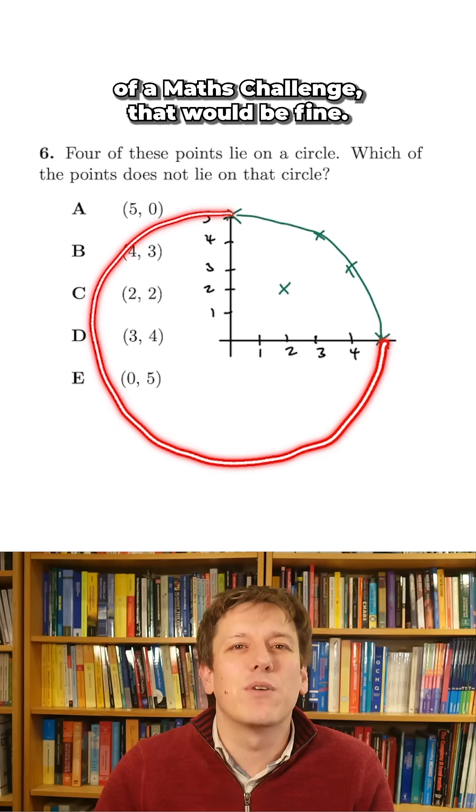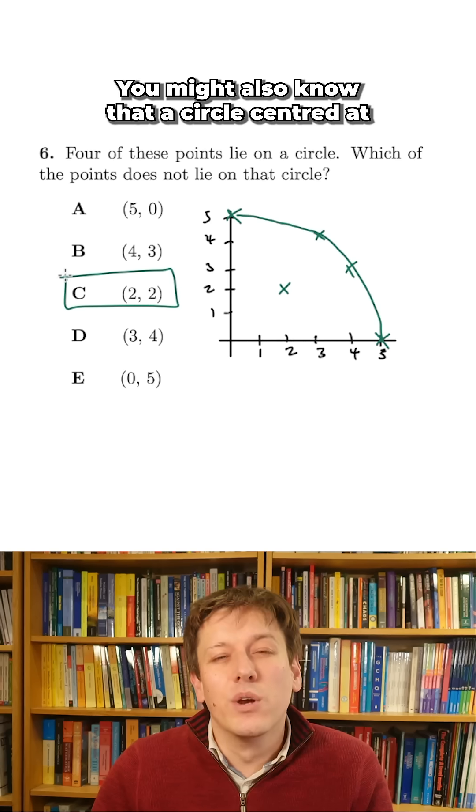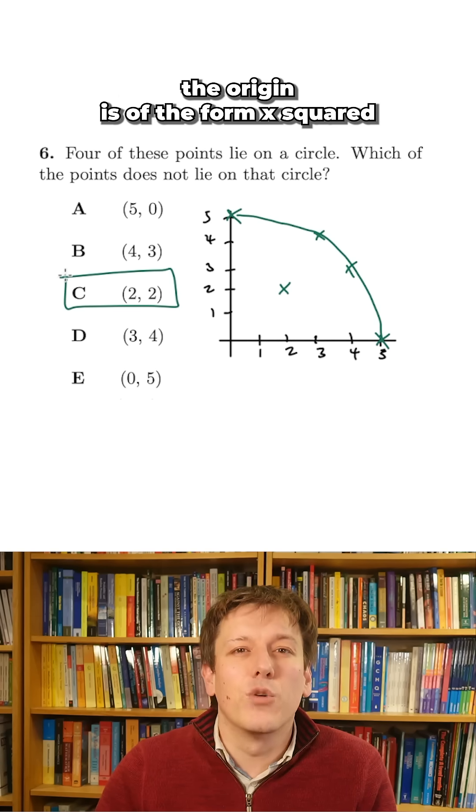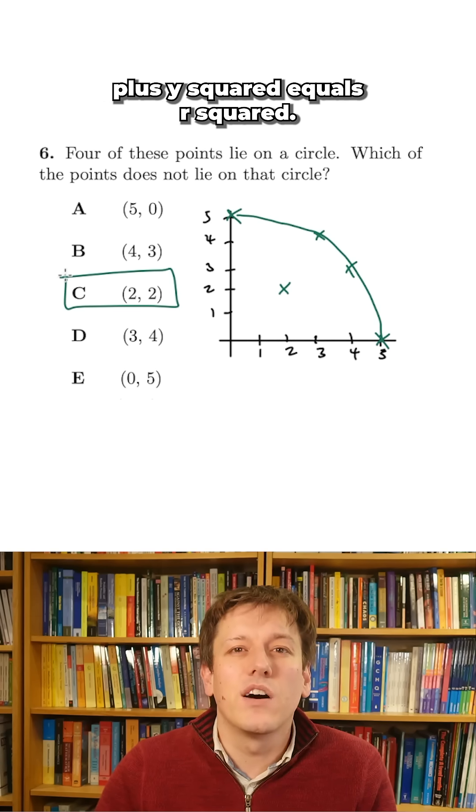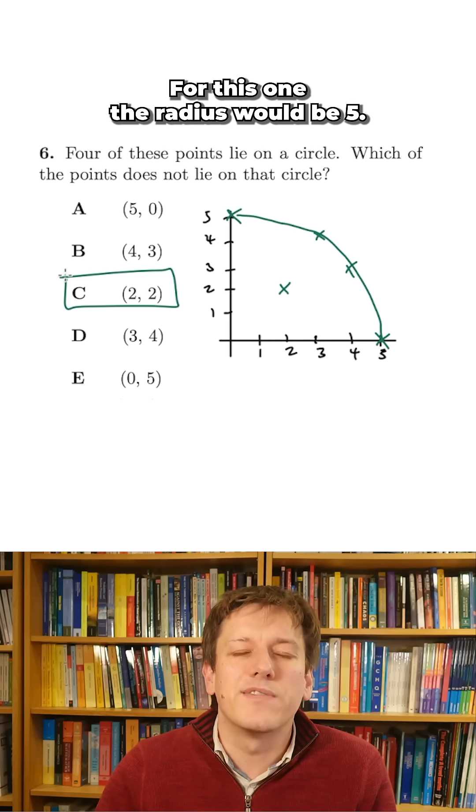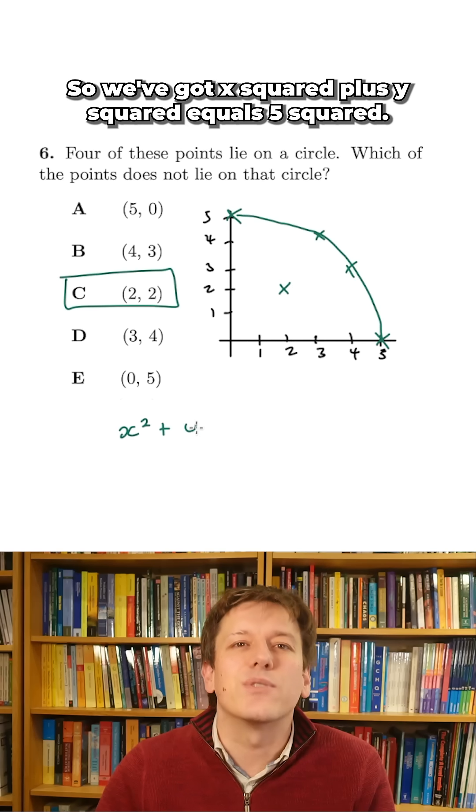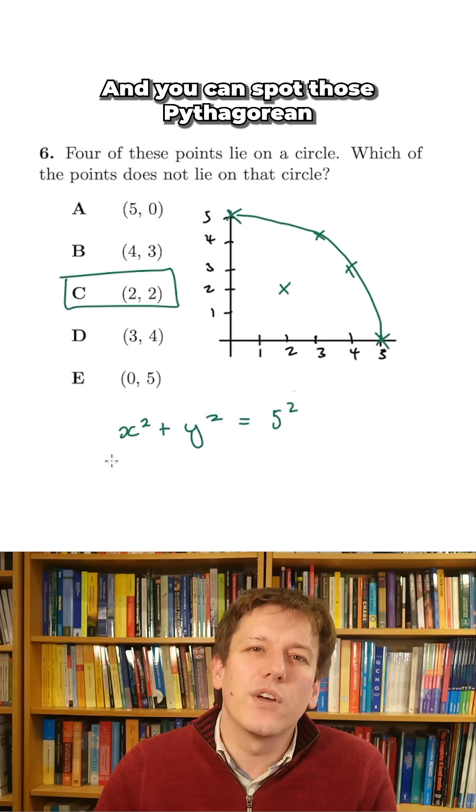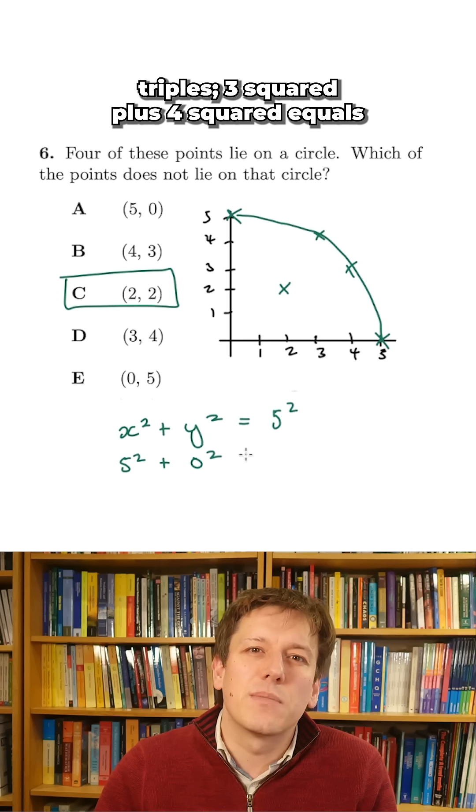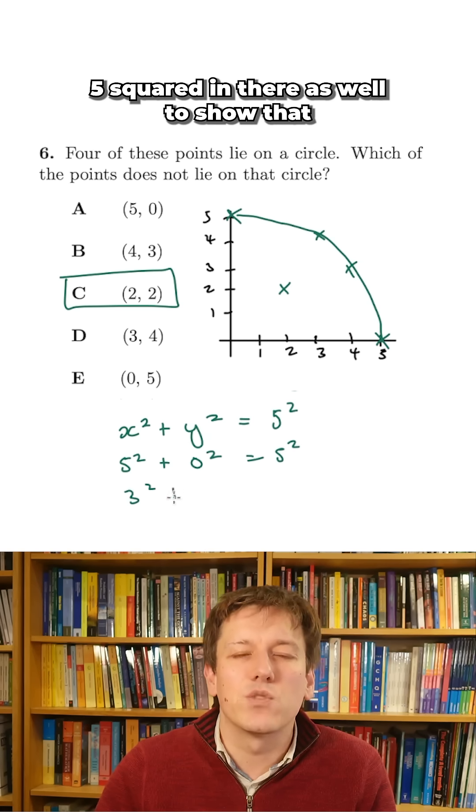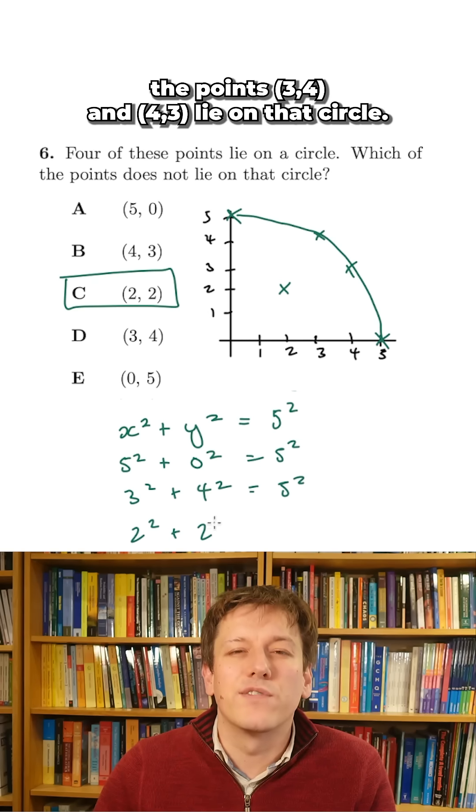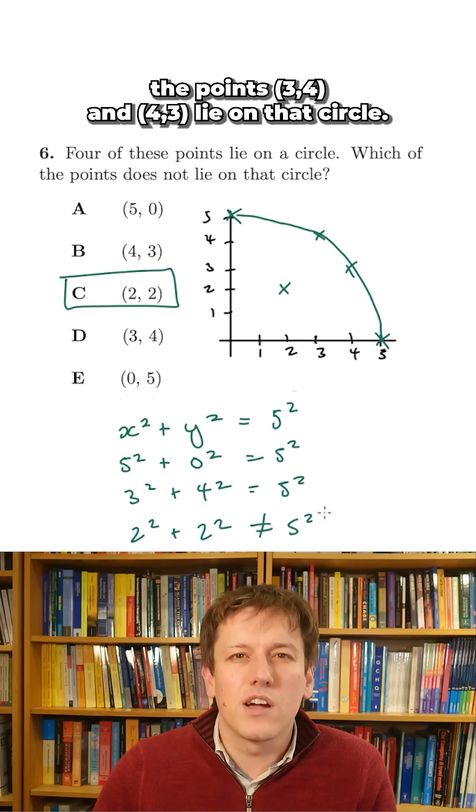So for the purpose of a maths challenge, that would be fine. You might also know that a circle centered at the origin is of the form x² + y² = r². For this one, the radius would be 5, so we've got x² + y² = 5². And you can spot those Pythagorean triples, 3² + 4² = 5², in there as well, to show that the points (3,4) and (4,3) lie on that circle.